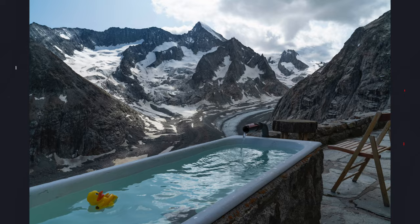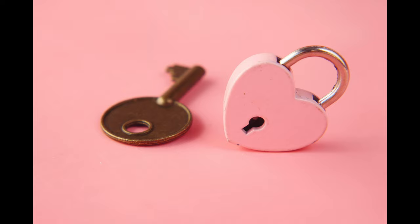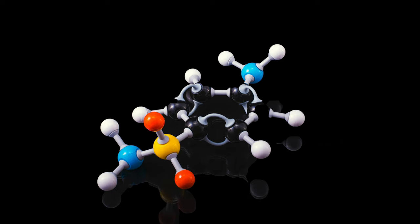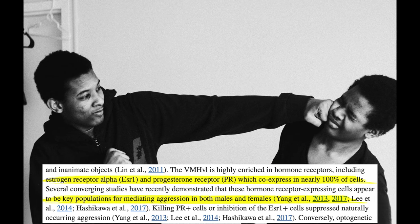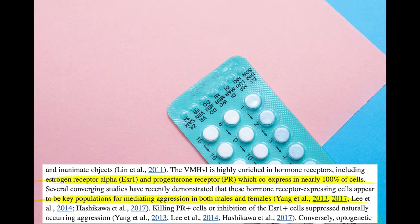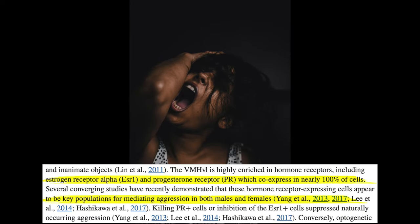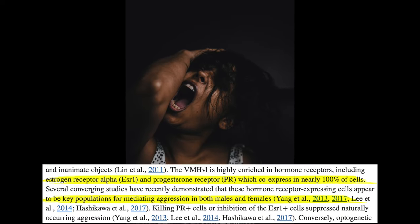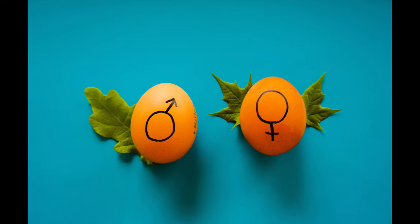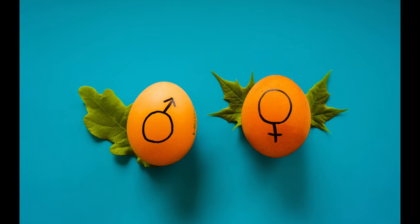If you are too hot you will motivate yourself to cool down, and vice versa. Contrary to what most believe about aggression, testosterone does not trigger aggression. The triggering mechanism is in fact estrogen receptors within the VMH. So the long-held belief that testosterone makes people aggressive is wrong — it is the female sex hormone estrogen that makes humans aggressive, both physically and indirectly. Both men and women have testosterone and estrogen, but at different levels.